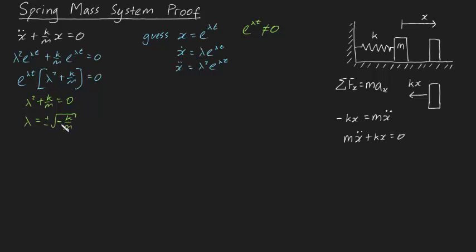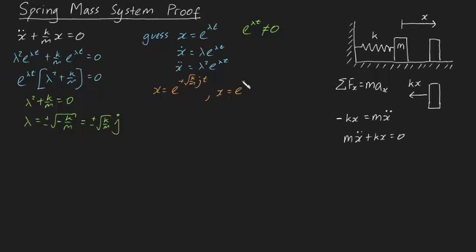Which is interesting because that negative under the square root means you're dealing with complex numbers. So lambda has two values: it's plus or minus the square root of k over m times the imaginary constant i — or if you're an engineer, you usually write it as j, the square root of minus one. This shows us there are two values for lambda such that our guess holds true. So there are two possible solutions: x equals e to the plus square root of k over m times jt, and x equals e to the minus square root of k over m times jt.